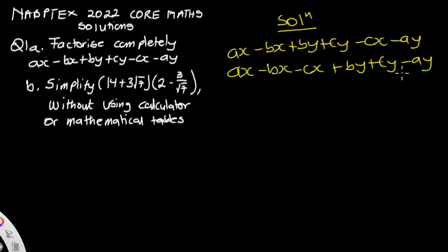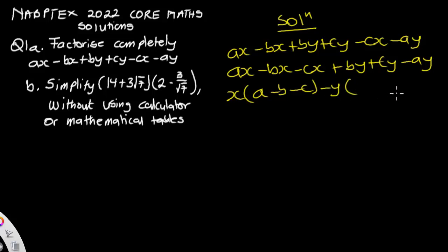Now we factorize each group. We have x in common in the first group, so we factor x out and we are left with a minus b minus c. Then we factor negative y out from the second group, and we are left with negative b minus c plus a inside the bracket.